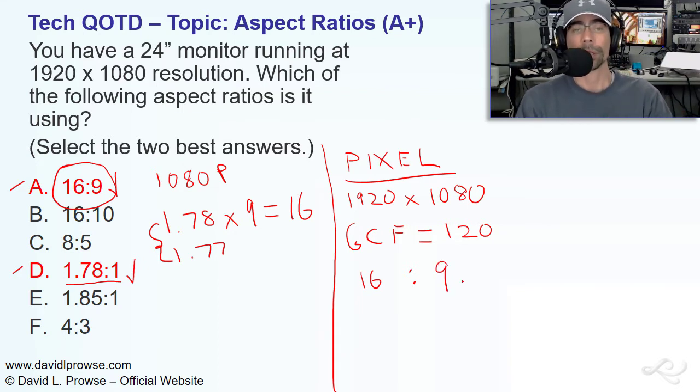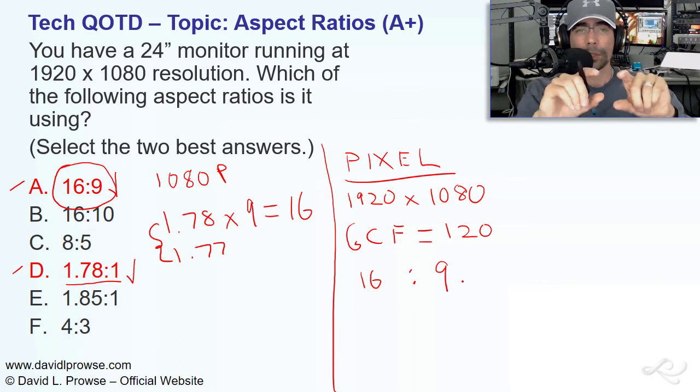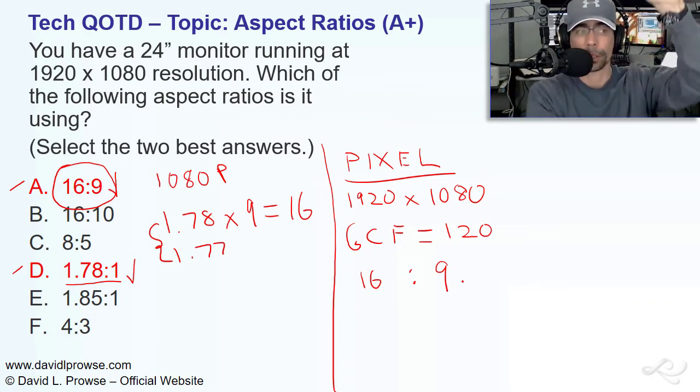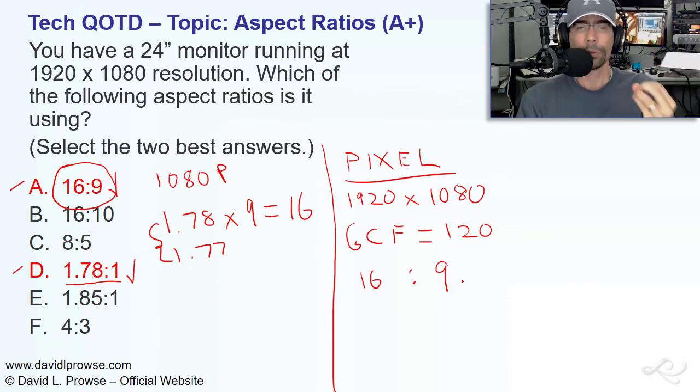So, our aspect ratio is 16 to 9. Or we just say 16:9. This means that for every 16 pixels horizontally, you have 9 pixels vertically. And we use 16:9 because those numbers represent the smallest integers possible without using a fraction, without using a decimal point and numbers beyond it.